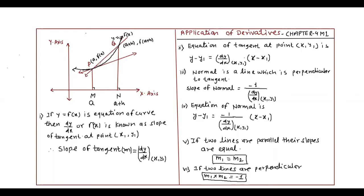Tangent means a line which passes through a point of the curve, touching the curve. A line which touches the curve or circle, we call it a tangent. This is a tangent and this is a normal. I have made a curve and now there is a formula on this.